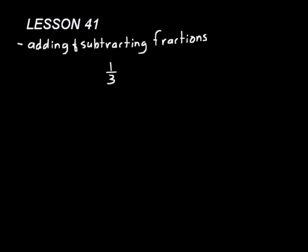Anytime you want to add or subtract fractions, they have to have a common denominator — in other words, their denominators have to be the same. For example, one-third plus one-fourth, you cannot add those together. That will not work because they don't have common denominators. That's what common denominator means: the same denominator.